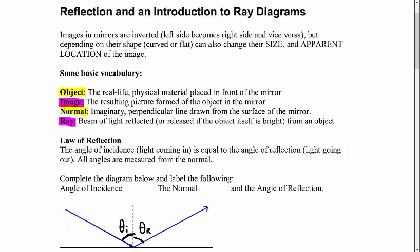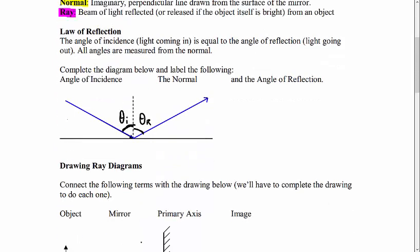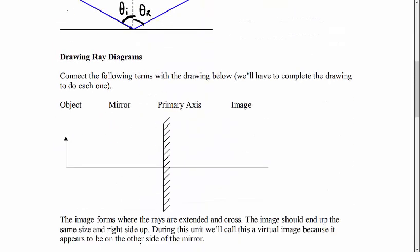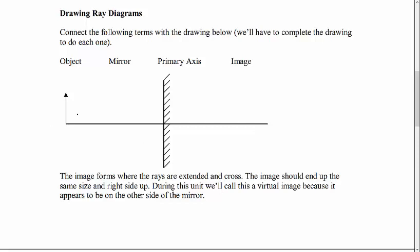Where it gets a little fancier is when we look into ray diagrams. We're going to look from a side view, so our object right here. That's going to be our physical thing that's in front of the mirror. We draw mirrors with whatever their shape is, but we'll put little hatch marks behind them to indicate that light can't get through. We talk about a primary or principal axis, an imaginary line that runs perpendicular to our mirror. An image is going to be something that we're going to see.